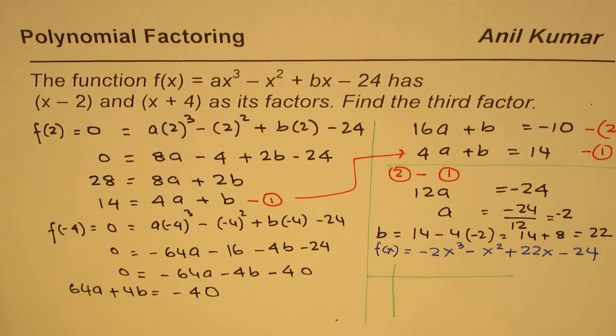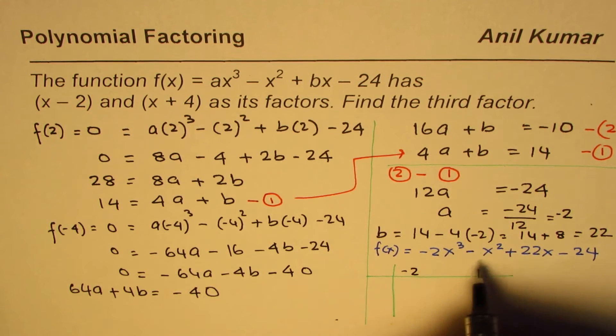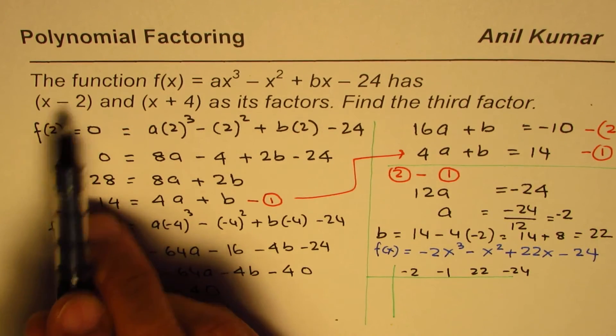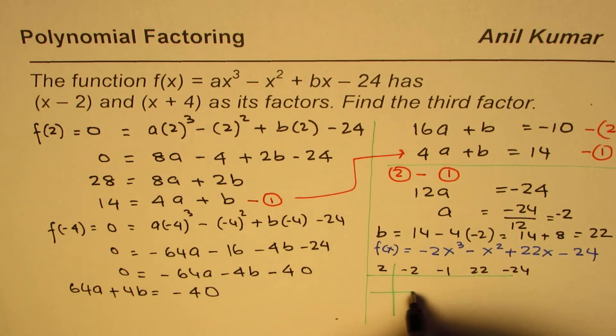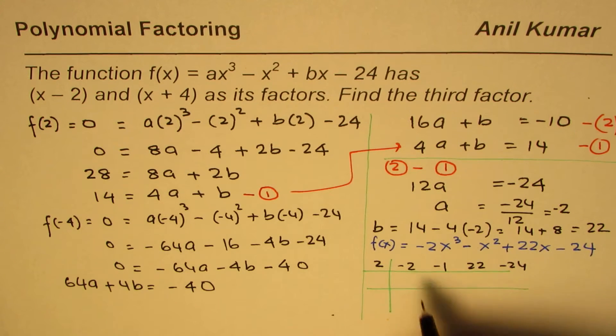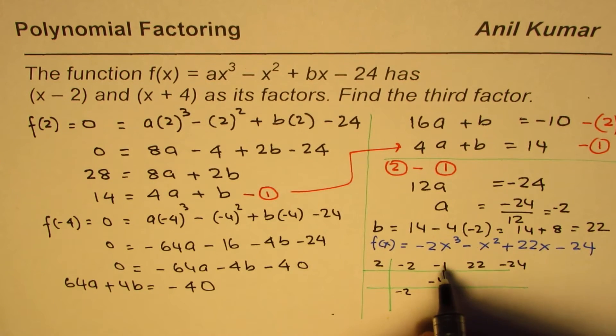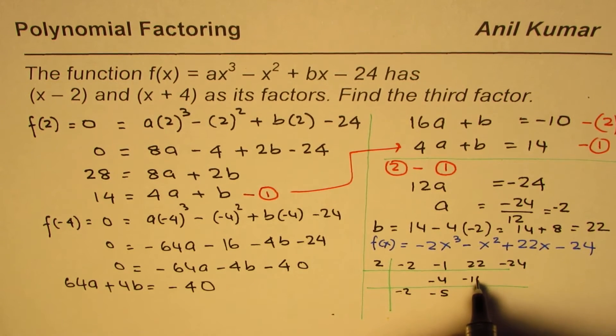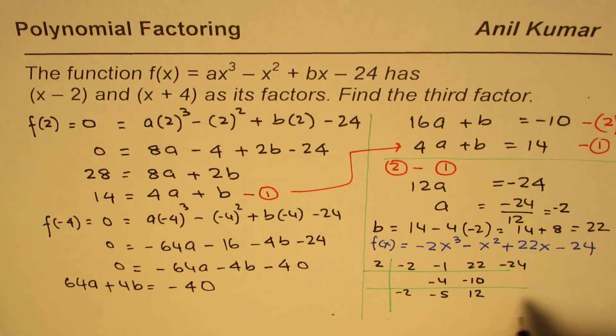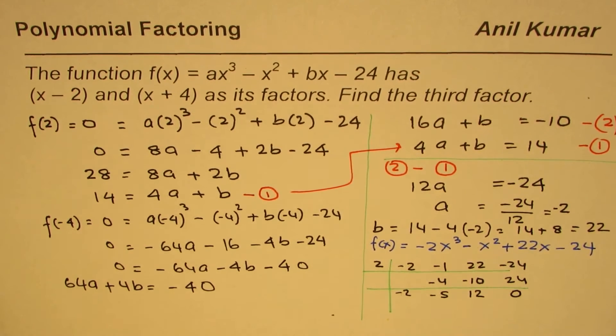We'll write down these coefficients: minus 2 for x³, minus 1, plus 22, minus 24. We are first dividing by x minus 2, so we'll write 2 here. We'll bring down minus 2. Multiply this by 2, we get minus 4. Add them up, minus 5. Multiply, you get minus 10. Add them up, you get 12. Multiply, you get 24. Add them up, you get 0. So the remainder is 0. This gives you the quadratic equation minus 2x² minus 5x plus 12.